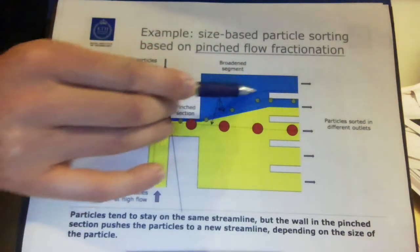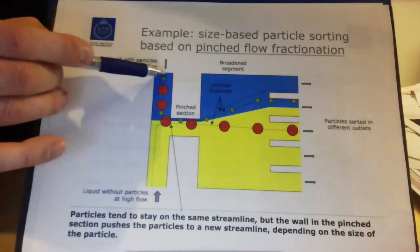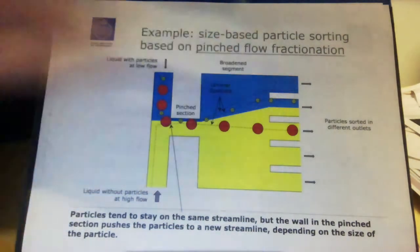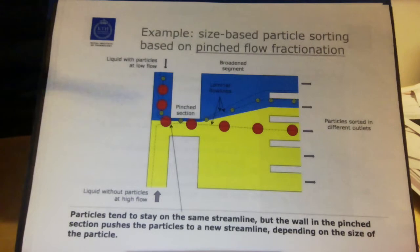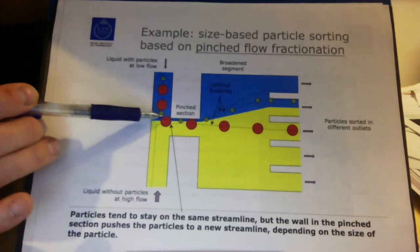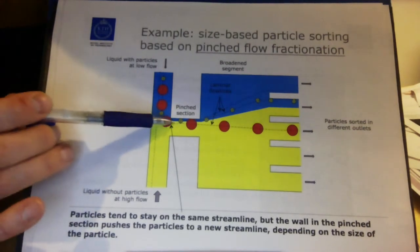But my green particles are not there anymore. What has happened? Well, the green particles, it's laminar flow, so they try to follow their streamline.